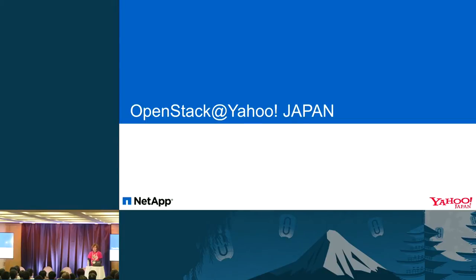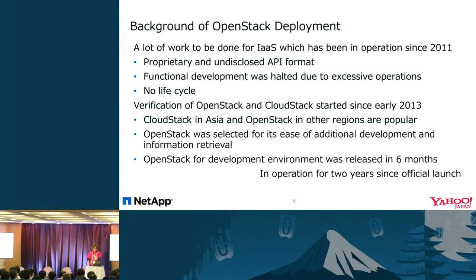From my side, I will talk about our approach to the OpenStack environment at Yahoo Japan. As you know, in addition to the internet portal side, we provide a lot of other services. It's important to offer services swiftly while maintaining stable operation. Before OpenStack deployment, we were using a homegrown IaaS environment as a private cloud, but there were a lot of issues with that.